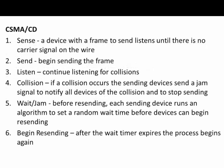Let's take a look at just how CSMA/CD functions and how devices access the network. Step one: sense, or sensing for a carrier signal. A device or computer on the network with a frame to send listens on the line until there is no carrier signal on the wire. If there's no carrier signal on the wire, then the device is free to send.